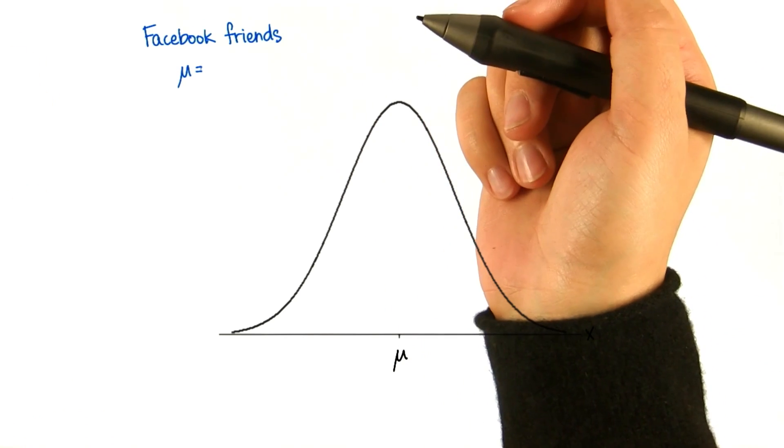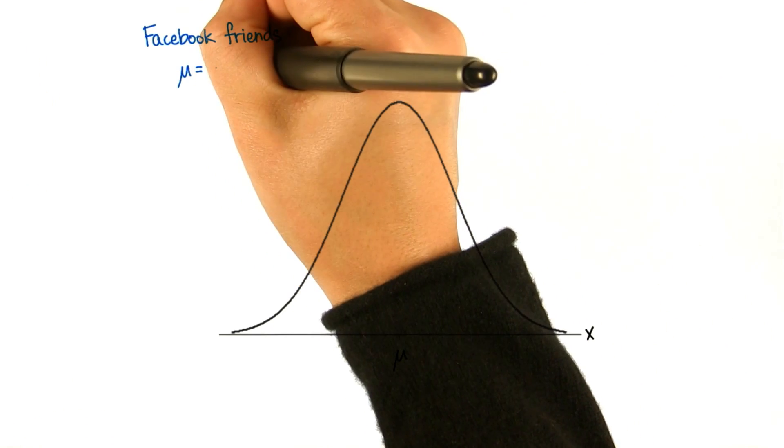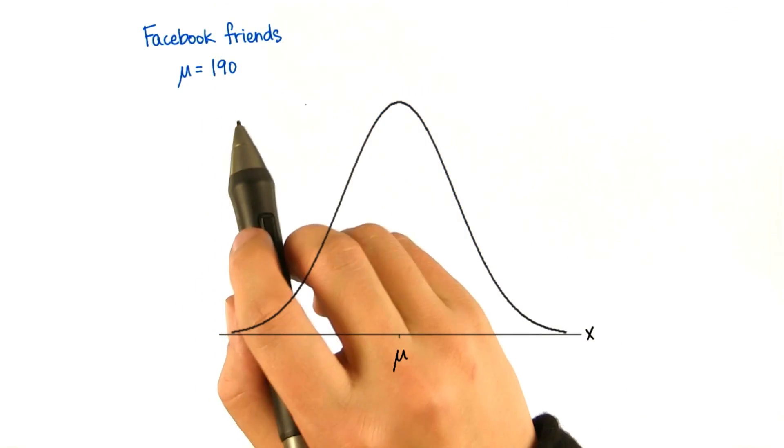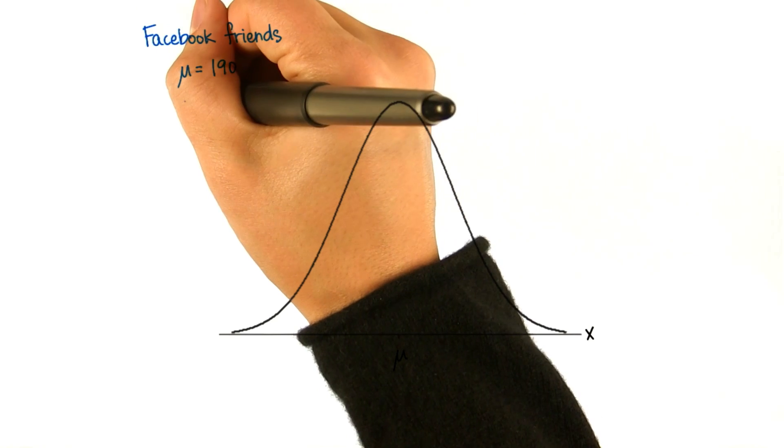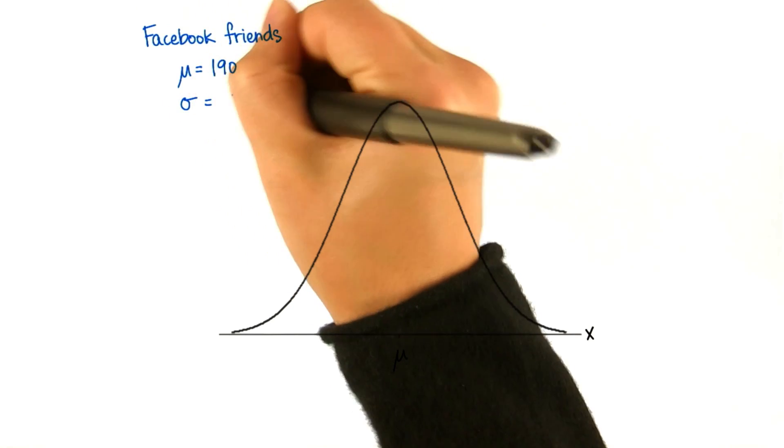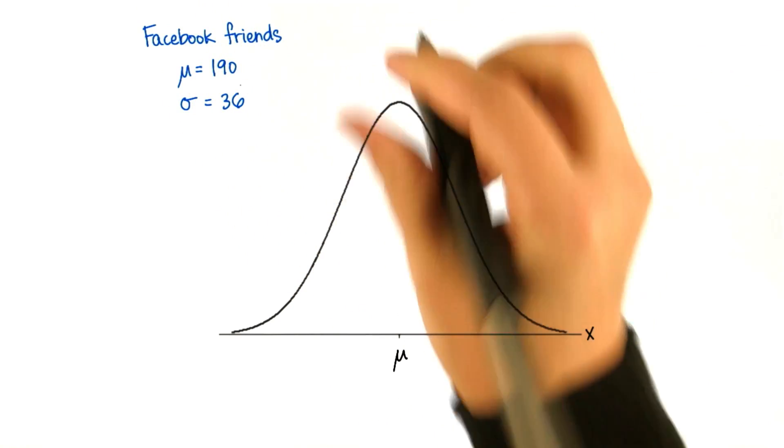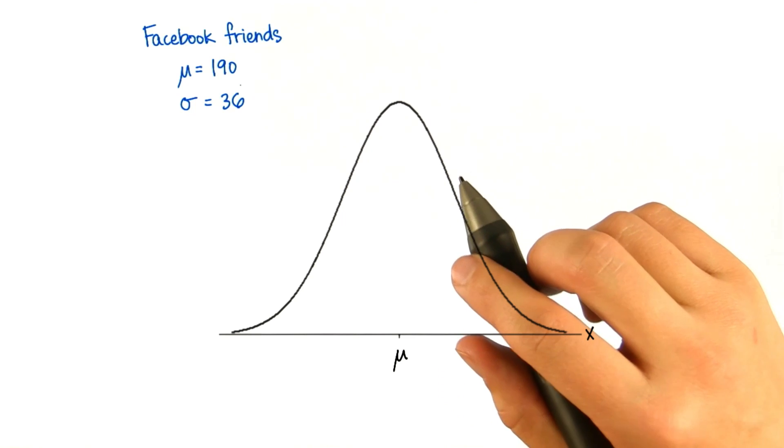So let's refer back to our normal distribution. The mean is 190, which is the actual mean of Facebook friends—I looked it up. But let's pretend the standard deviation is 36, like it was in our example where Andy and I were arguing our unpopularity.